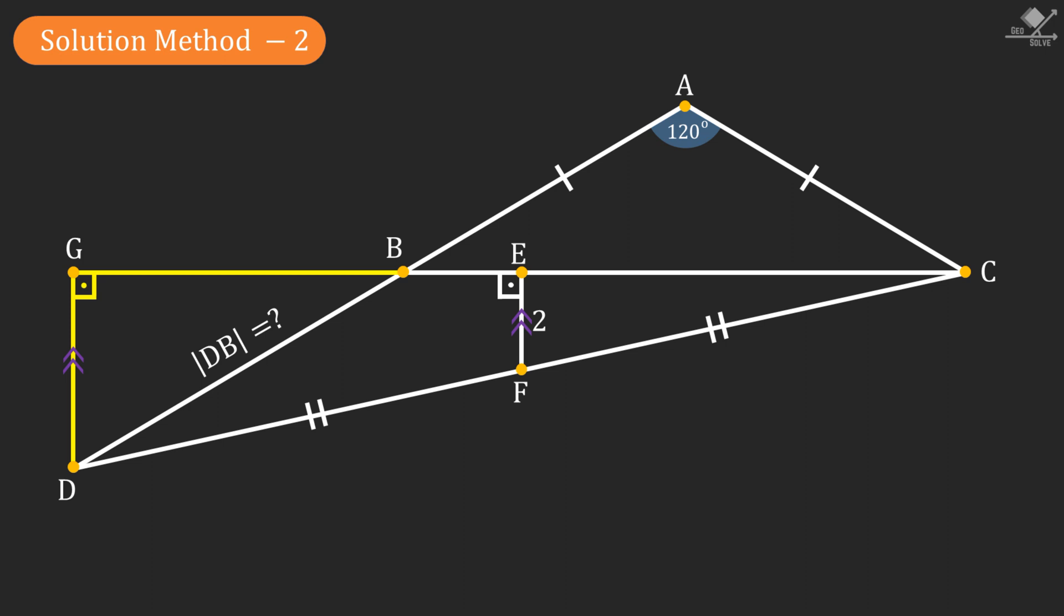Since triangle CEF and CGD are similar, line segment GD will be 4 units. These two base angles of the isosceles triangle will be 30 degrees each. So angle GBD should also be 30 degrees.